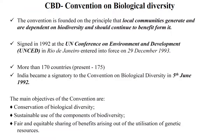The Convention on Biological Diversity is founded on the principle that local communities generate and are dependent on biodiversity and should continue to benefit from them. It was signed in 1992 at the UN Conference on Environment and Development (UNCED) in Rio de Janeiro, and entered into force on 29th December 1993. More than 175 countries signed it. India became a signatory on 5th June 1992. The main objectives are: conservation of biological diversity, sustainable use of its components, and fair and equitable sharing of benefits arising out of the utilization of genetic resources.